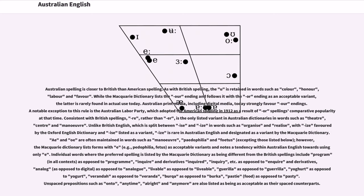Individual words where the preferred spelling is listed by the Macquarie Dictionary as being different from the British spellings include: program in all contexts, as opposed to programme; inquire and derivatives inquired, inquiry, etc., as opposed to enquire and derivatives; analog as opposed to digital, as opposed to analogue; livable as opposed to liveable; guerrilla as opposed to guerilla; yogurt as opposed to yoghurt; veranda as opposed to verandah; burka as opposed to burqa; pasty (food) as opposed to pastie. Unspaced forms such as onto, anytime, all right and anymore are also listed as being as acceptable as their spaced counterparts.